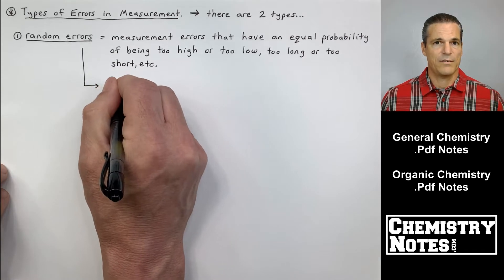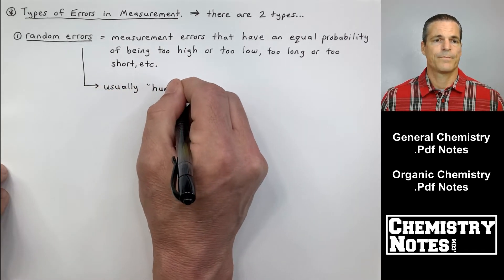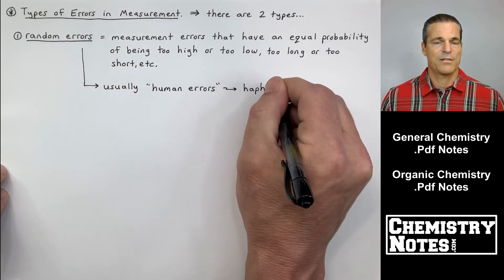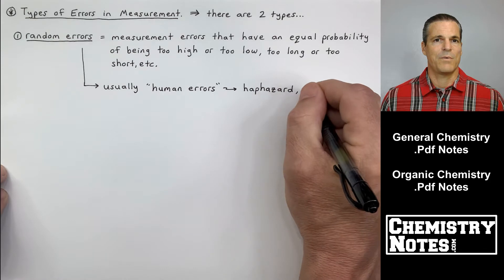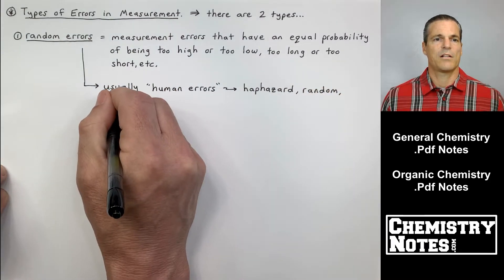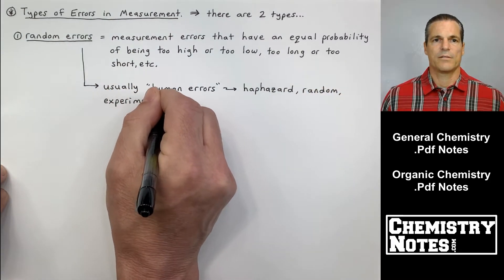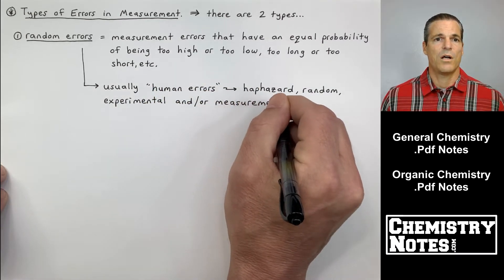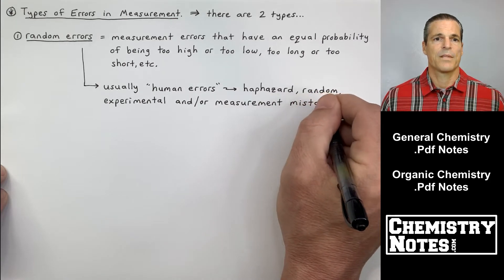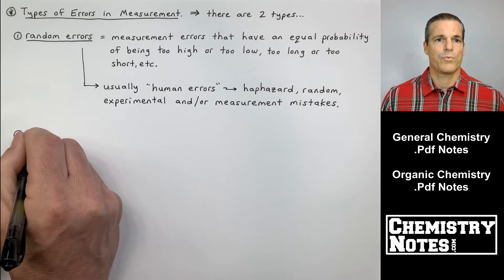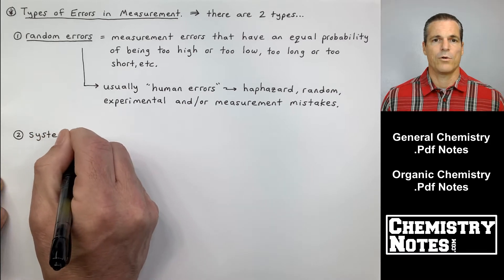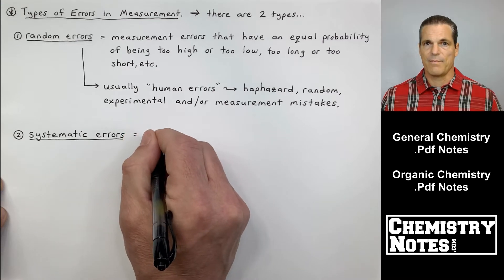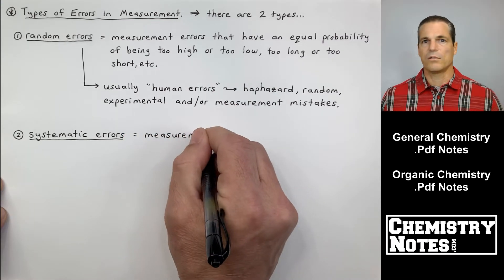There are random errors, which are essentially human errors. Measurement errors that have an equal probability of being too high or too low, too long or too short, etc. These are usually human errors. They're haphazard, random, experimental, and/or measurement mistakes. They happen one direction or the other 50% of the time - too high, too low, too long, too short, etc.